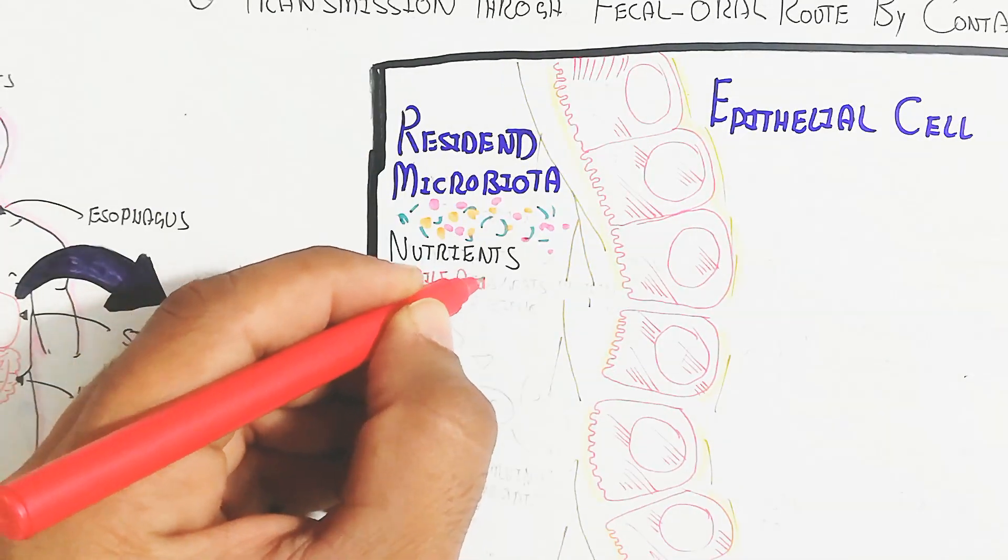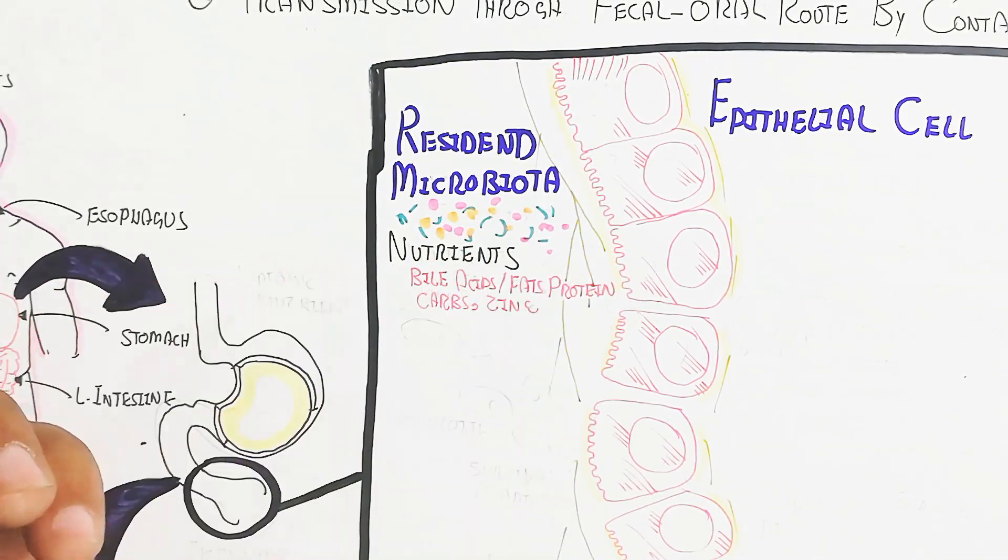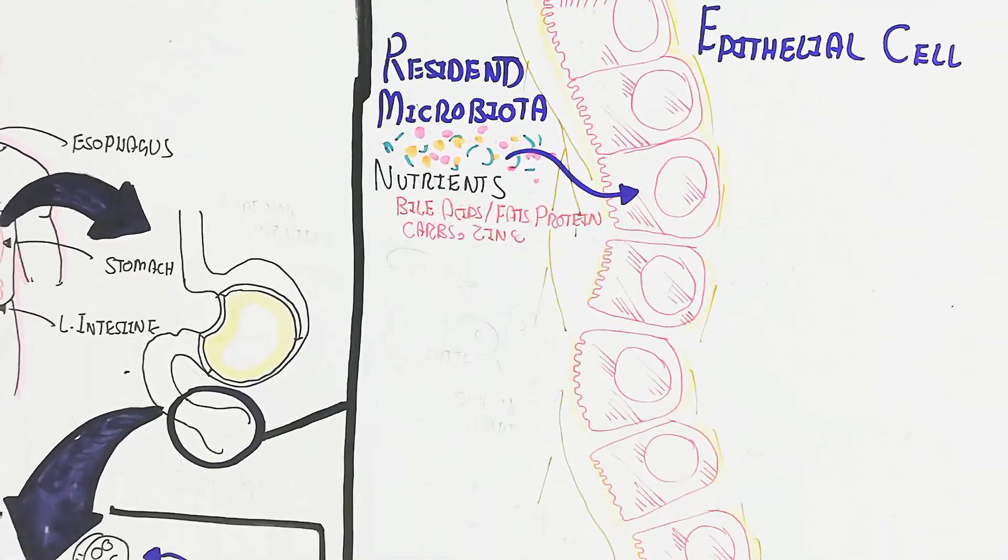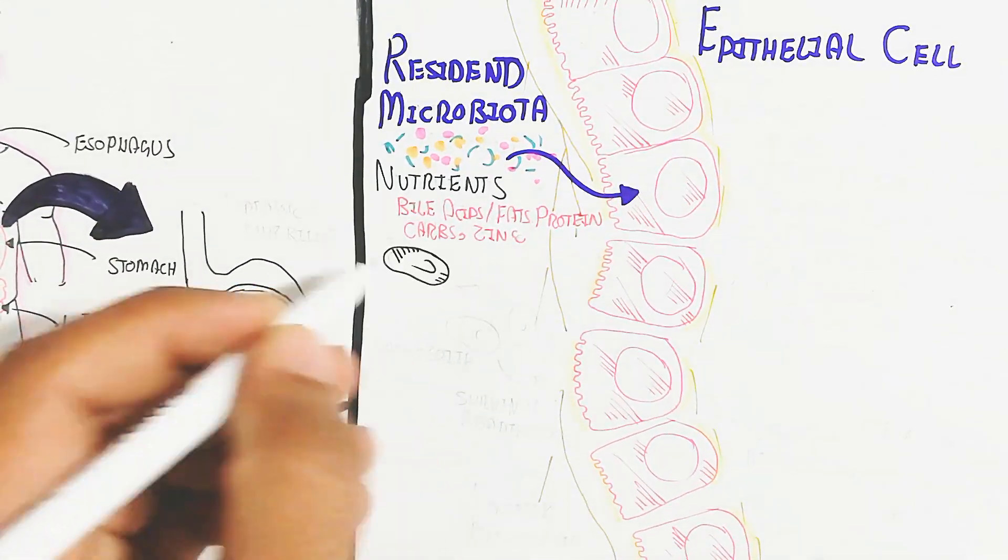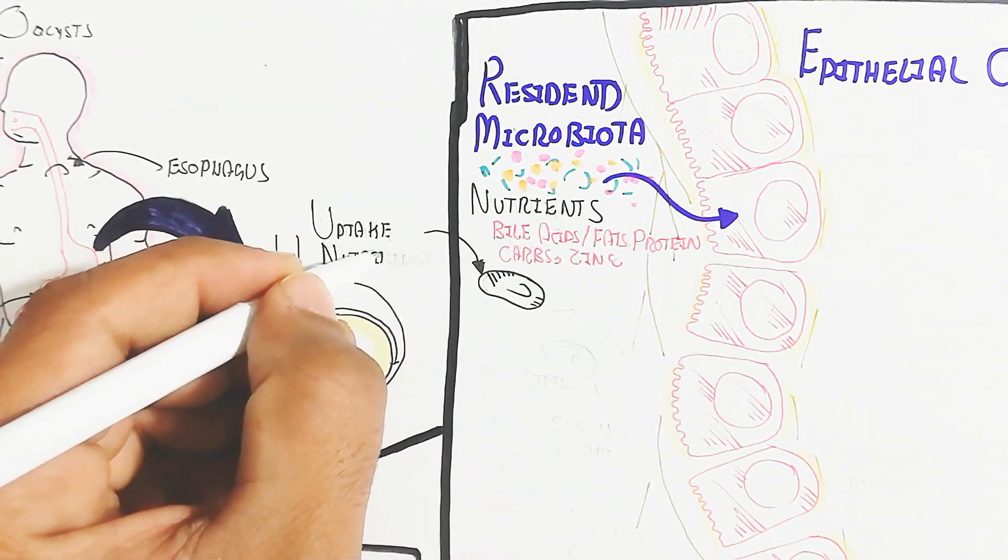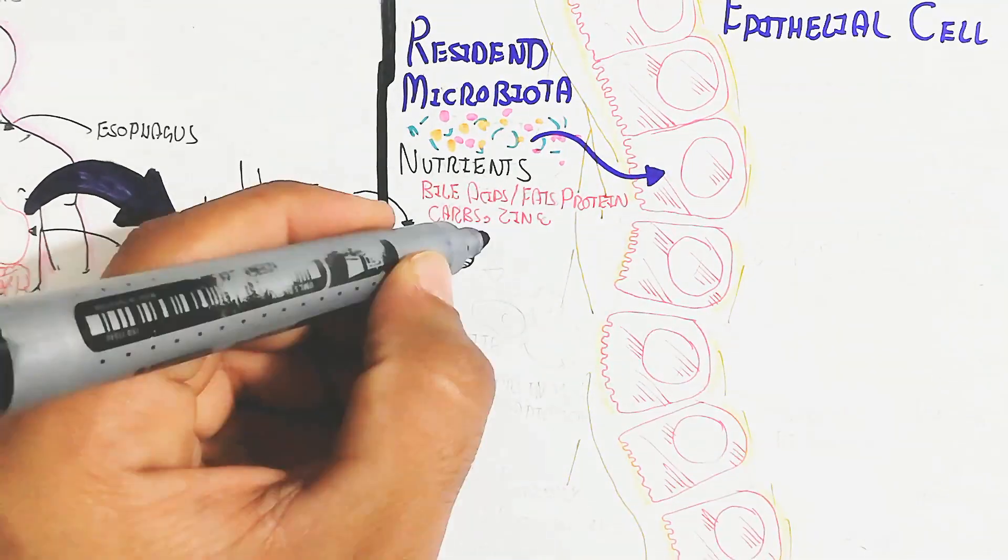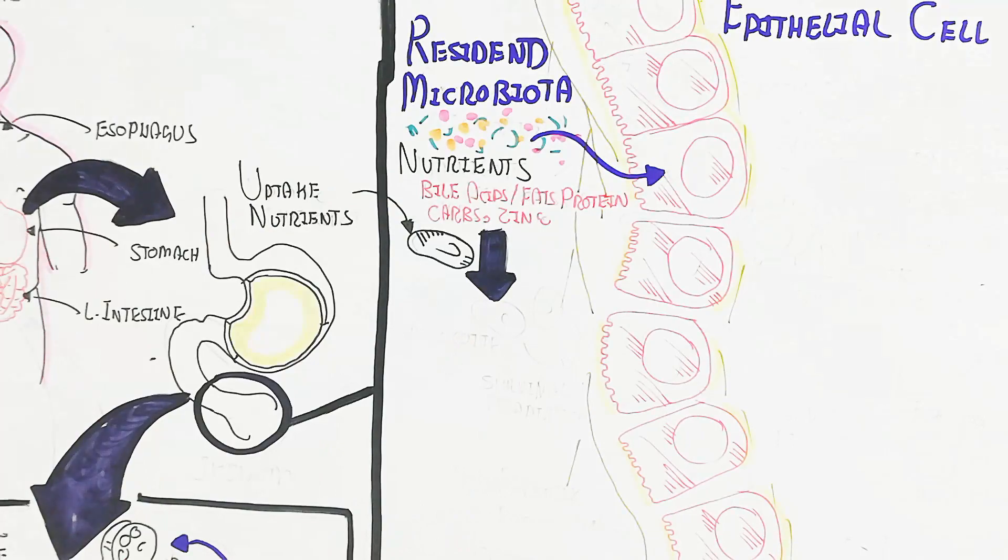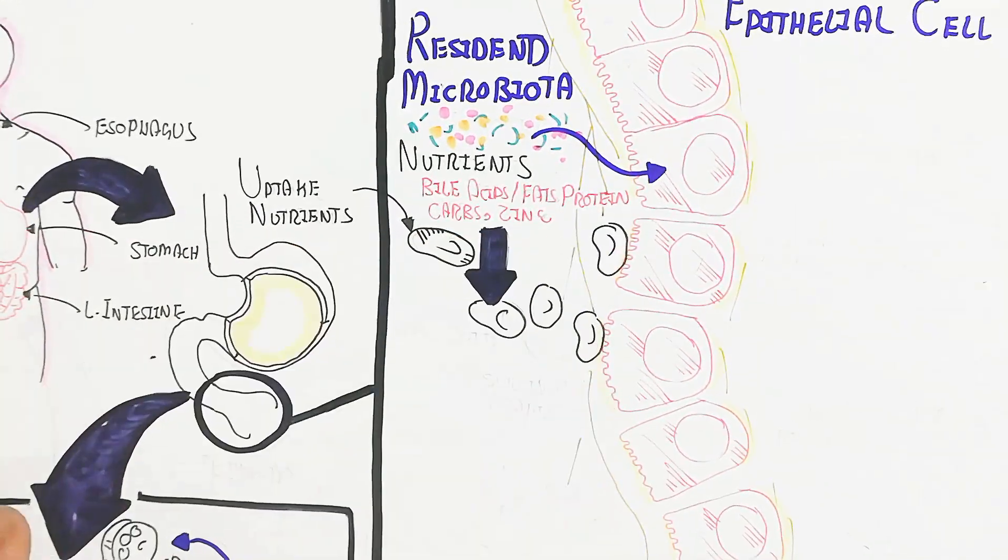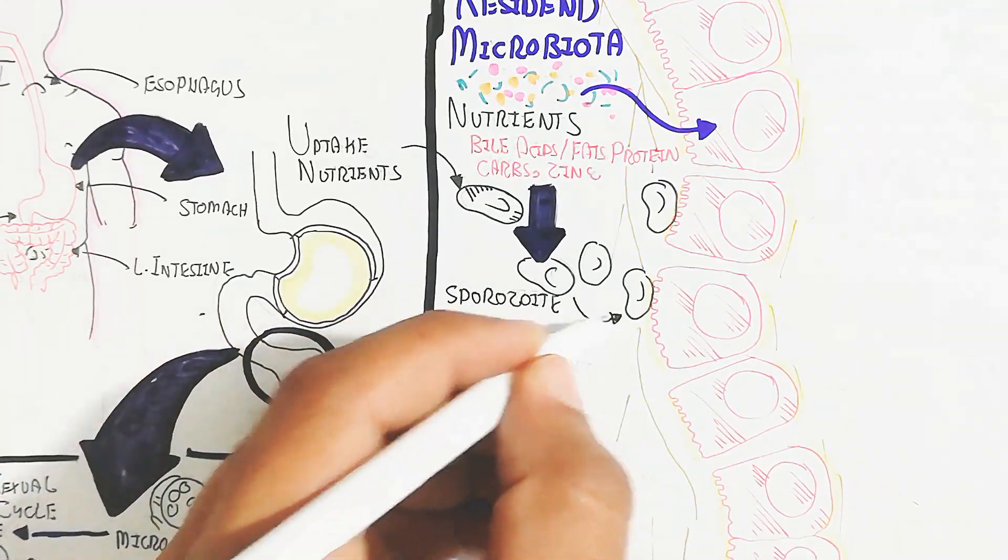These nutrients include bile acids, fats, protein, and carbohydrates. It is absorbable and the enterocyte will absorb it through different mechanisms. This is the uptake of nutrients via sporozoite formation. The thick-walled oocyst leads to sporozoite formation and survival and adaptation. This leads to interaction with the enterocyte, the brush border end of the enterocyte, the microvilli.